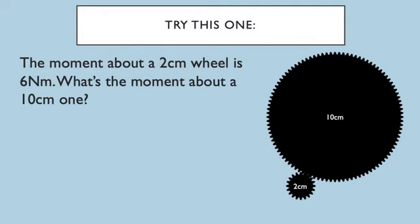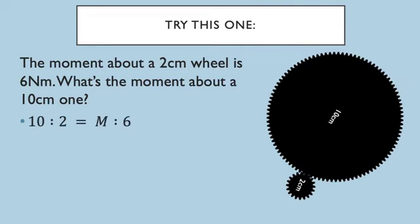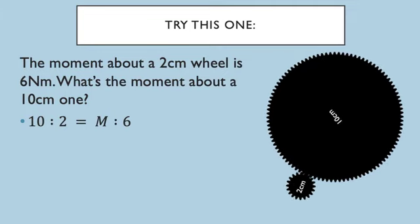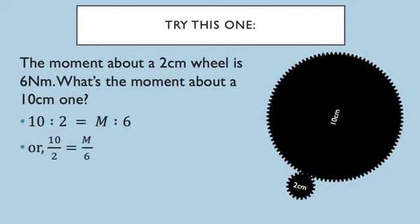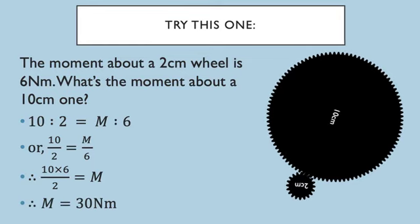So the moment about the 20 centimeter wheel would be 80. Maybe you'd like to pause the video there and see if you can have a go at this one. The moment of a 2 centimeter wheel is 6 Newton meters. What's the moment about the 10 centimeter one? Okay, I'm going to go through the answer now. We look at the ratios of the radius: 10 over 2 equals the moment of the large one divided by the moment of the small one. So 10 over 2 equals M over 6. So 10 times 6 divided by 2 equals the moment. The moment is 30 Newton meters.